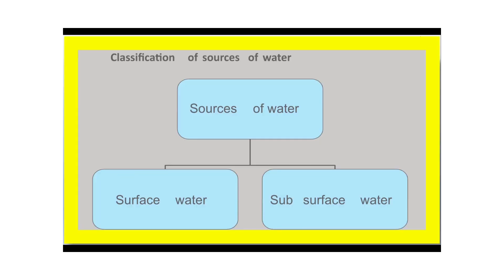First component: source of water. There are two types — surface water and subsurface water. Surface water includes: storage reservoir, river, pond, lake, and sea.